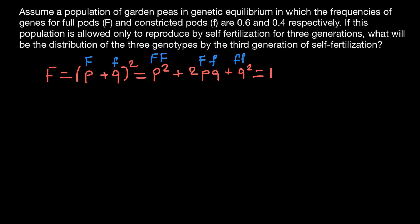The frequency of the dominant allele F is 0.6 and the recessive allele is 0.4. Therefore, the frequency of the homozygous dominant genotype is 0.6 × 0.6 = 0.36, the heterozygous genotype is 2 × 0.6 × 0.4 = 0.48, and the homozygous recessive genotype is 0.4 × 0.4 = 0.16.